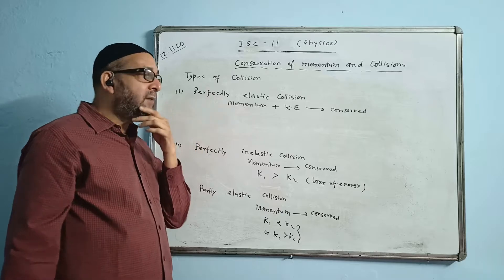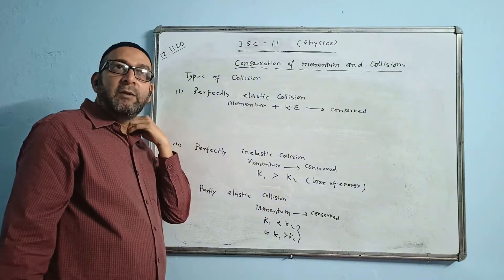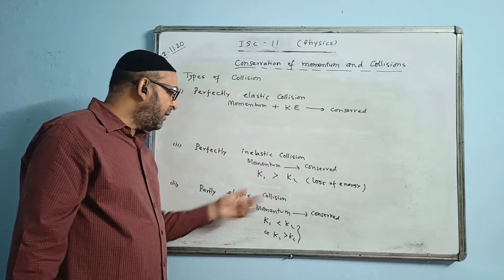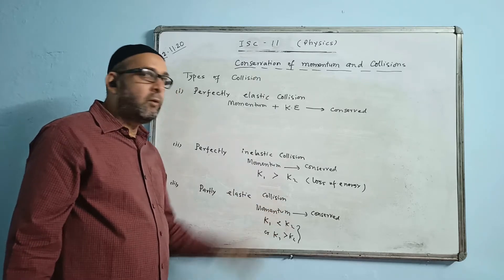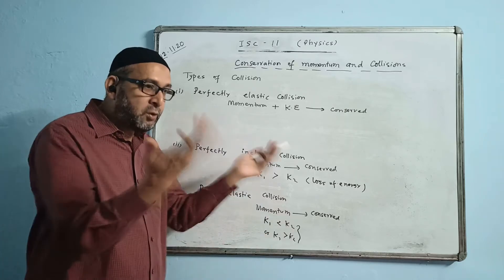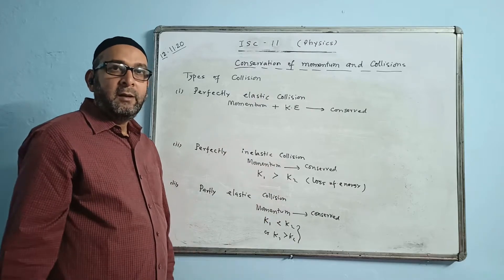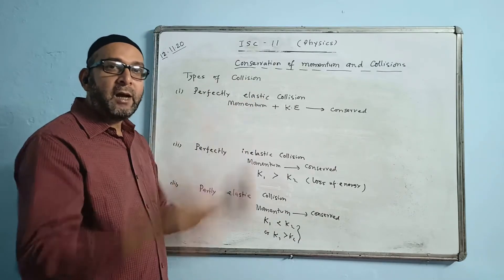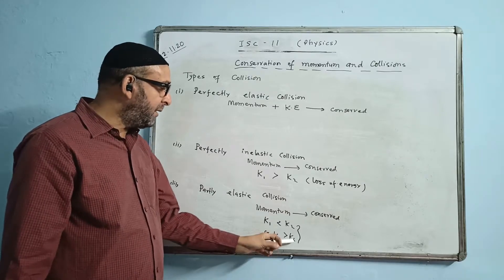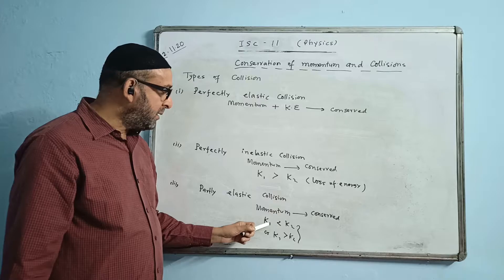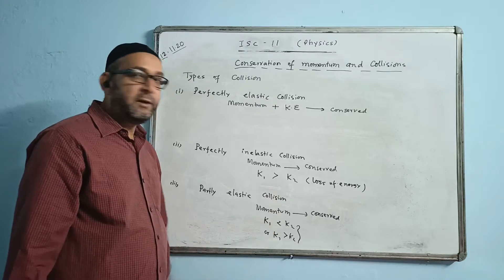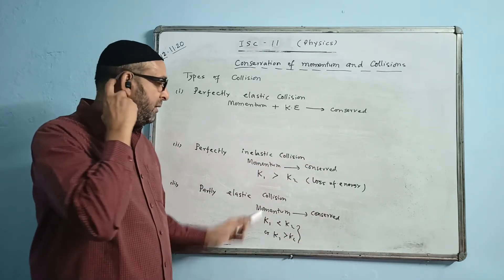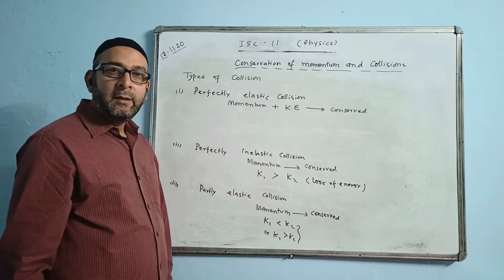In this second type of collision, initial kinetic energy will be more than the final kinetic energy. In partly elastic collision, kinetic energy can be less or even more. Normally, kinetic energy will be more at the time of an explosion — for example, a bomb exploding where initial velocity is near zero but after the explosion, particles fly out with much higher velocity, so final kinetic energy is much more than initial.